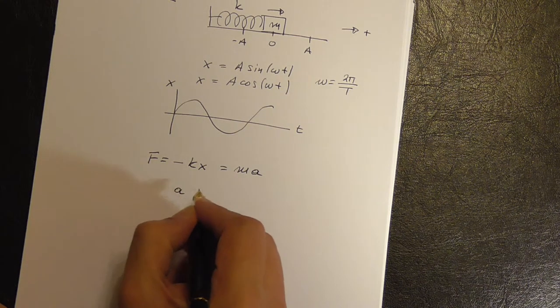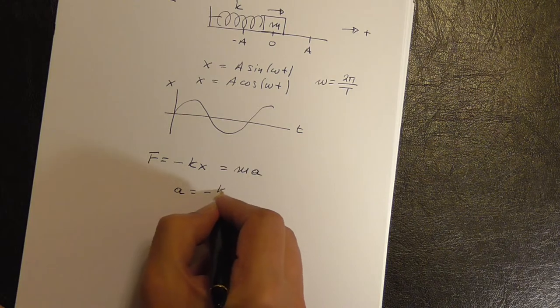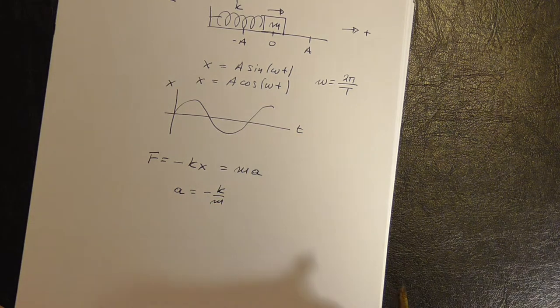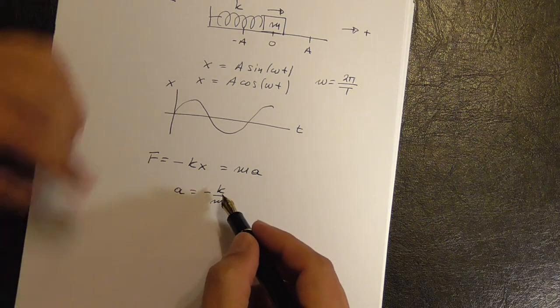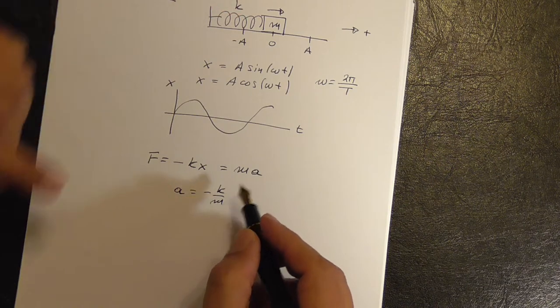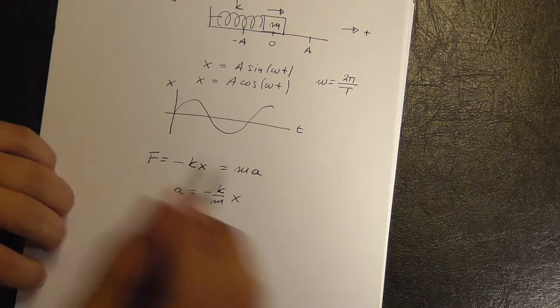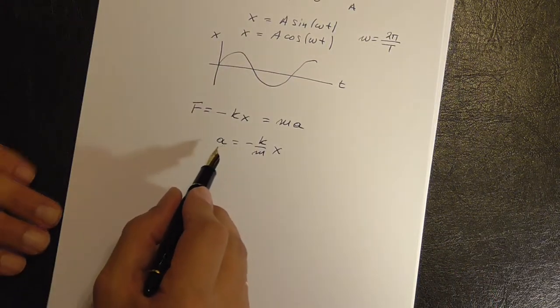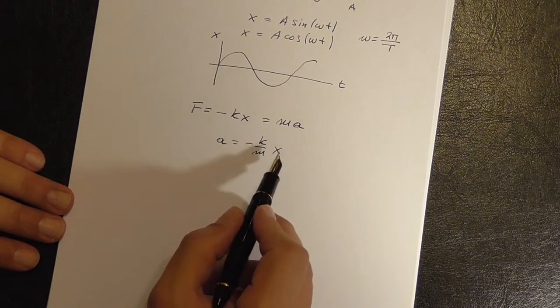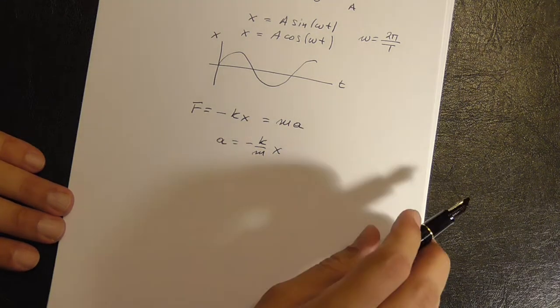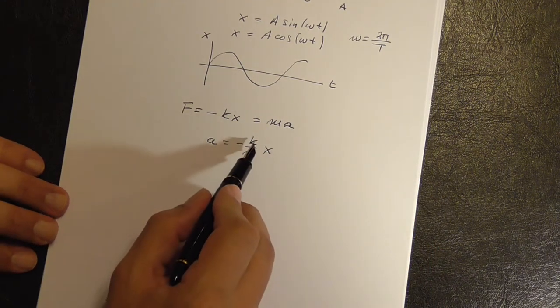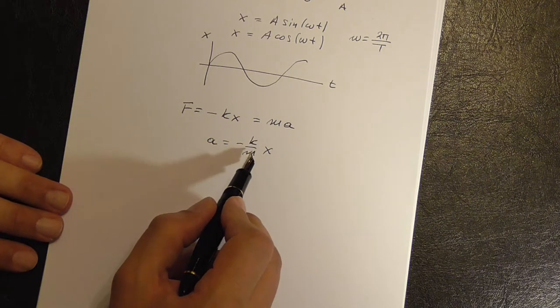So the acceleration is minus K over M. This is a constant. This describes the characteristics of the system. Times X. Acceleration is meters per second squared. X is meters.